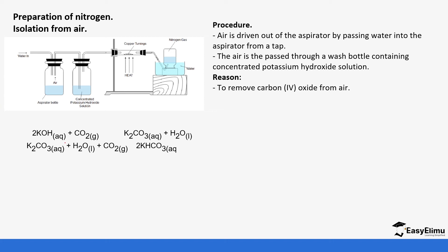The air is passed through a wash bottle containing concentrated potassium hydroxide to remove carbon dioxide from the air. Potassium hydroxide reacts with carbon dioxide to form potassium carbonate and water. This is different from calcium hydroxide, which forms a white precipitate — in this case the solution is colourless because salts of potassium are soluble. The potassium carbonate continues to react with more carbon dioxide to form potassium hydrogen carbonate.